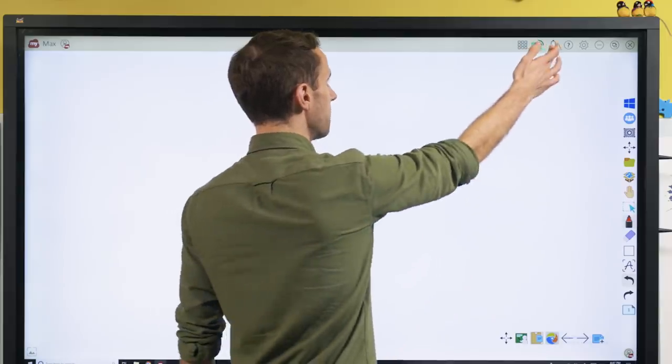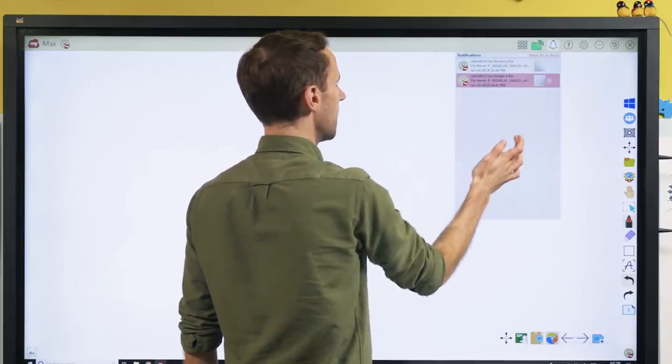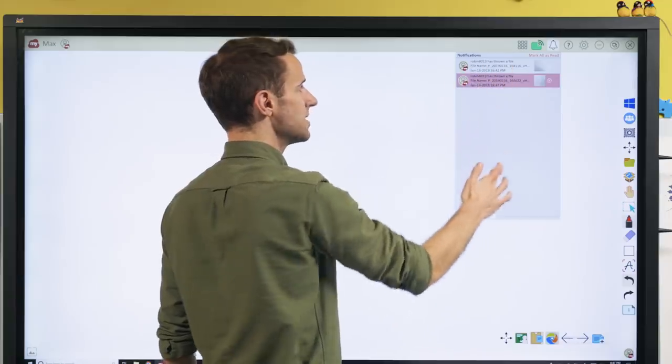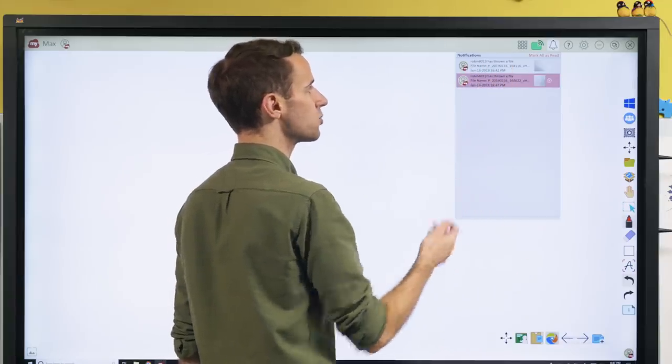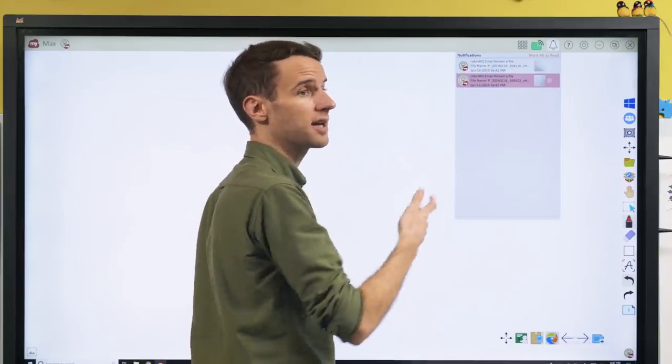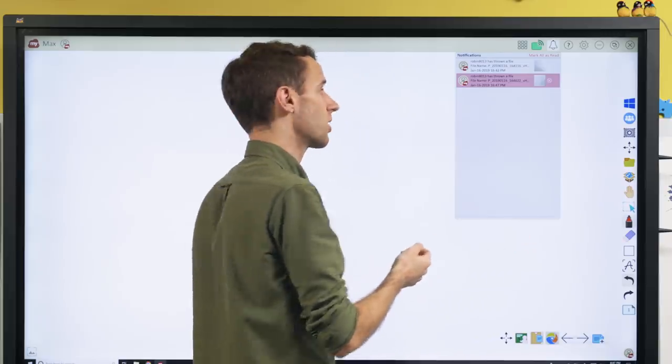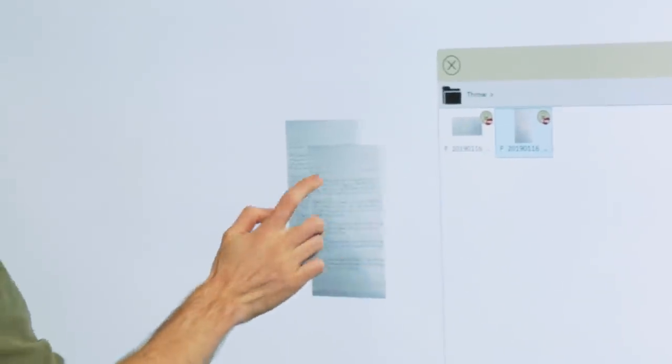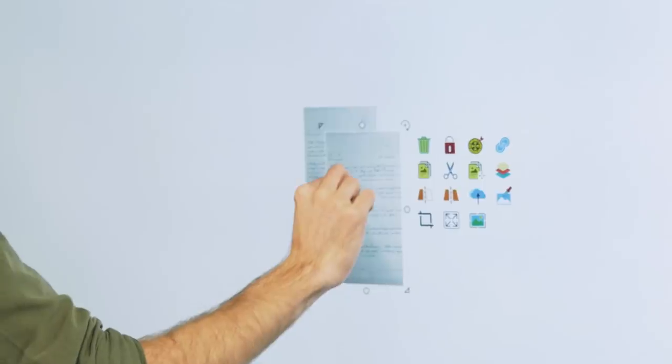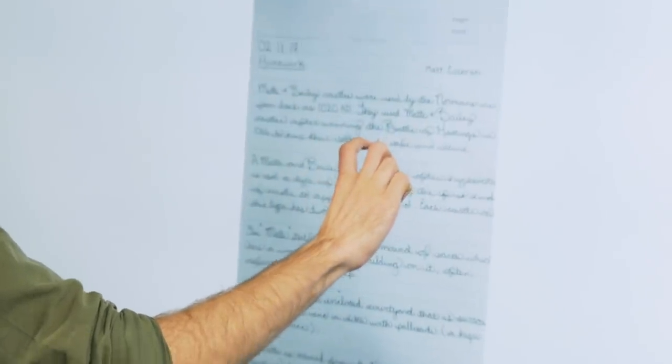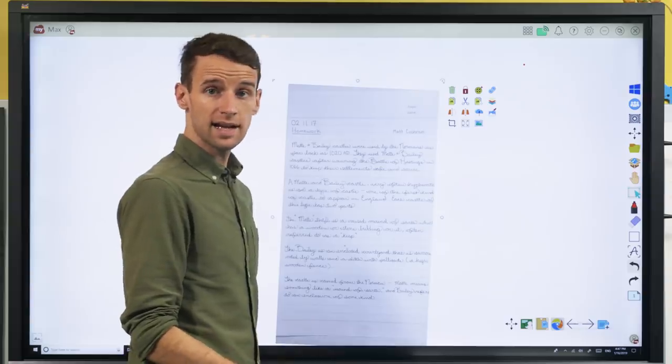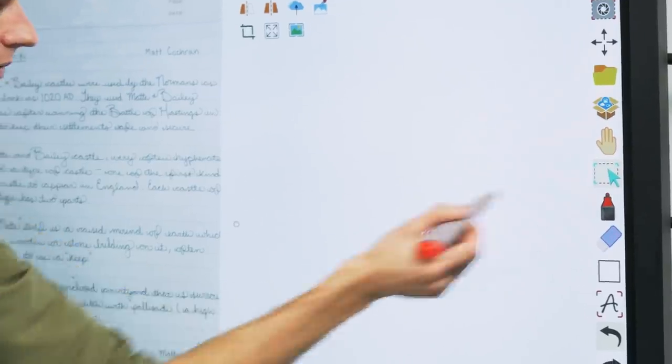Now you can see up here on this bell, I have a notification. Click that. And any files that I have requested or thrown from other devices will queue up here so that I can manually select them as the instructor. In this case, I've selected it. Here's my file. I can just drag that onto my ViewBoard and blow it up. I can annotate that as well as I see fit. Just grab the pen.